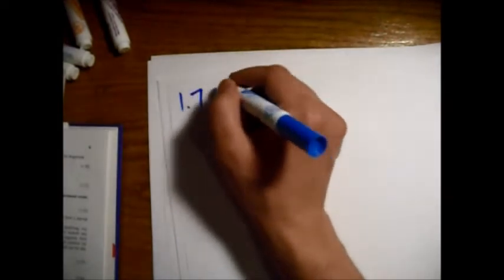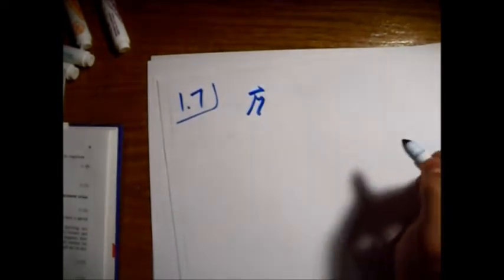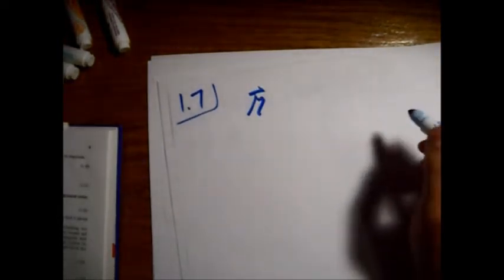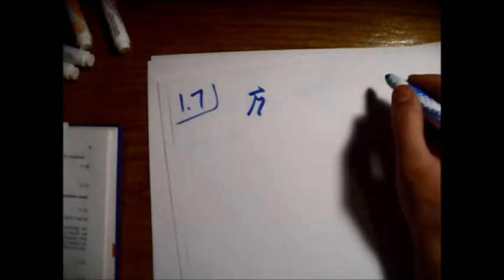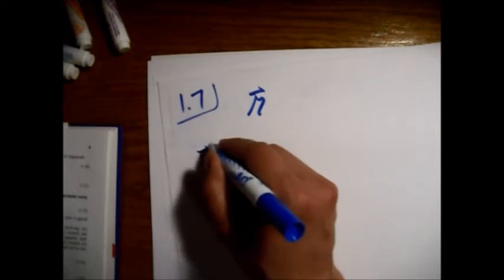So here's Griffiths E and M from 1.7, find the separation vector. Griffiths uses the cursive R, the source point, so for source points he uses R prime.